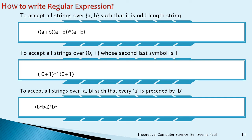To accept all strings over {a, b} of odd length: first write the even-length expression ((A + B)(A + B))* and then attach one more (A + B) at the end. This gives odd lengths 1, 3, 5, and so on.